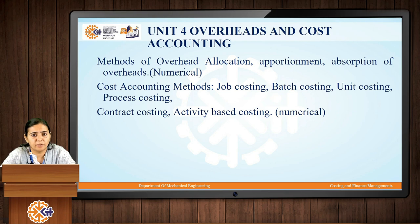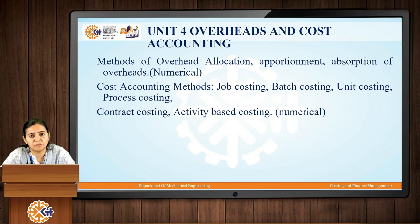Unit 4 is for overheads and cost accounting. Indirect costs must be included in the final cost of a product. Overheads, which are indirect costs, cannot be directly assigned to a single product — they must be distributed evenly across all products manufactured. There are different methods for overhead allocation, apportionment, and absorption. We also cover different cost accounting methods that vary depending on volume of production: job costing, batch costing, unit costing, process costing, contract costing, and activity-based costing.